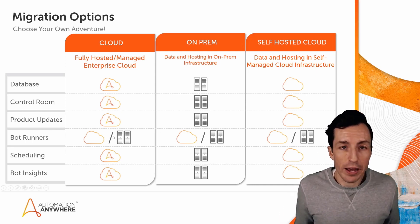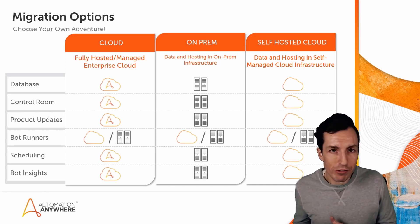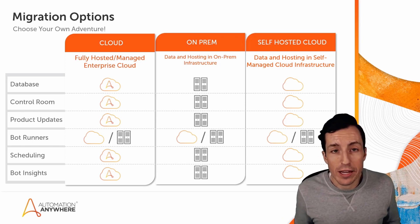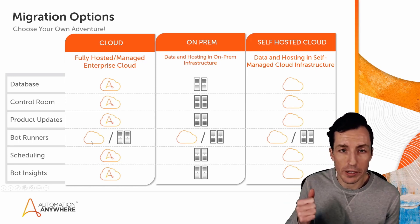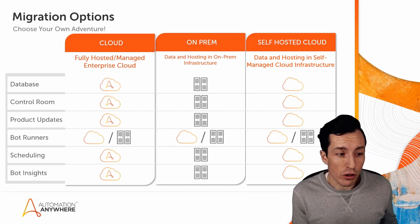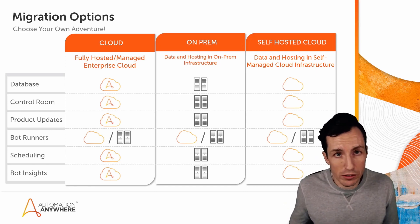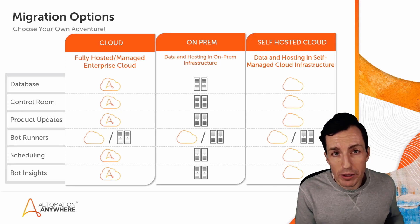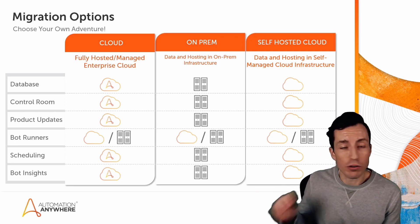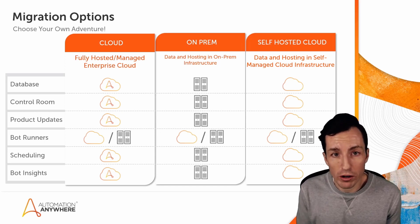One thing I want to clarify about the cloud column is your bot runners. Some developers ask: if I have a managed cloud environment, does that mean my bot runners have to be in the cloud? The answer is no. Whether your control room is in cloud, on-prem, or self-hosted cloud, your bot runners can still connect and accept tasks. They can be local, hosted on Azure or AWS, or VMs on a server you own — all of those are fine.